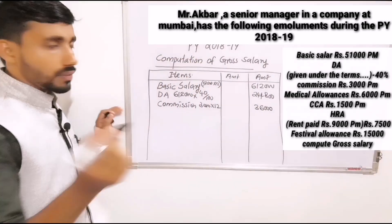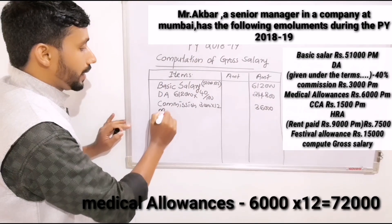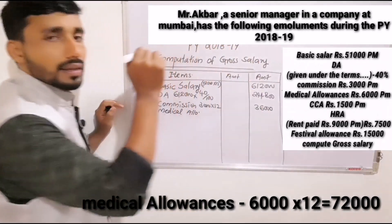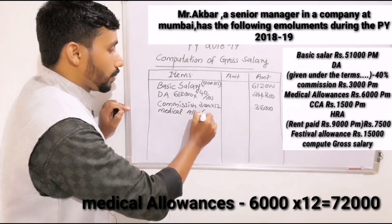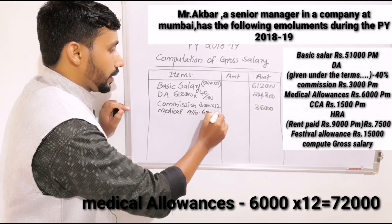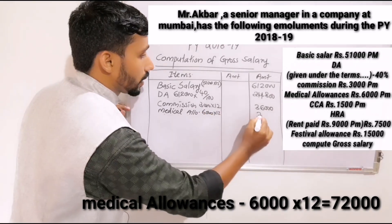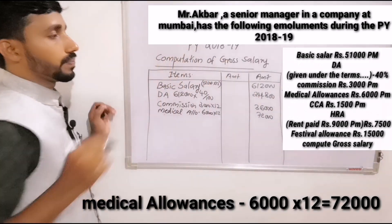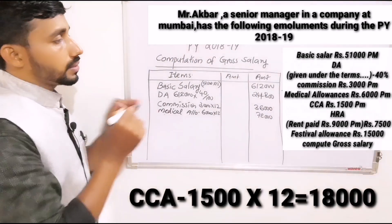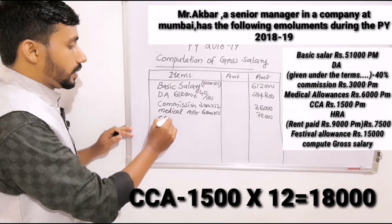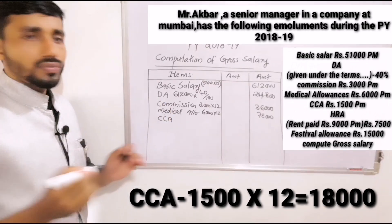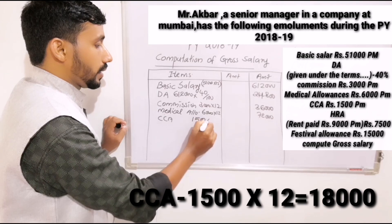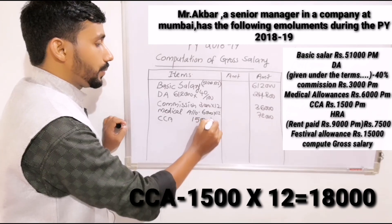The next item is medical allowance: $6,000 per month into 12 equals $72,000. The next is CCA — city compensatory allowance — which is fully taxable: $1,500 into 12.